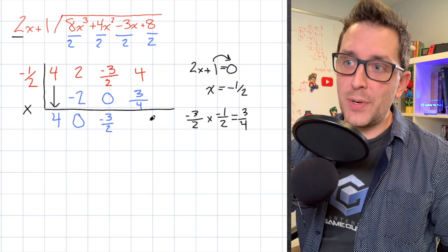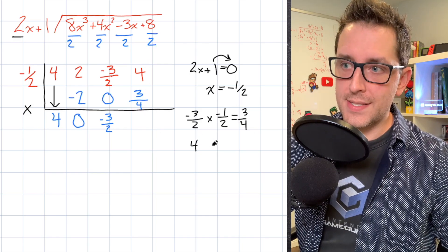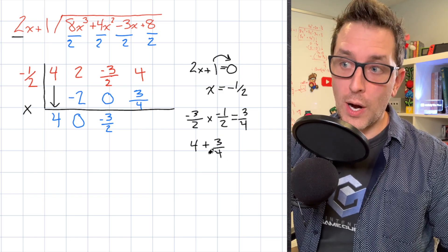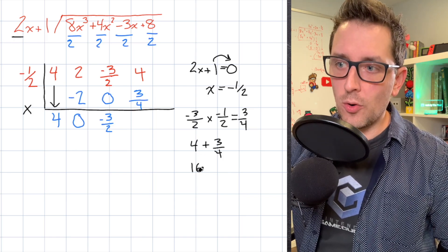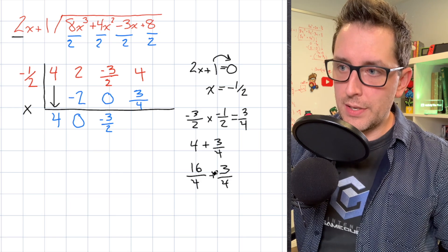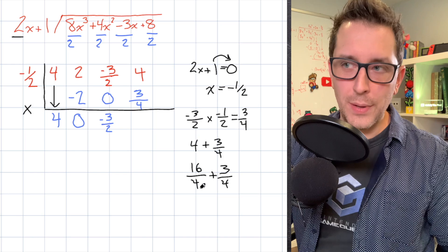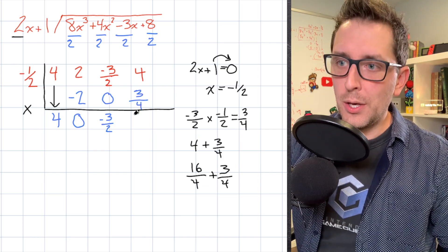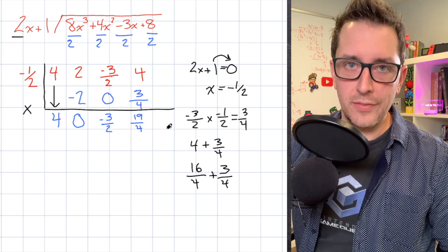The last thing we need to do is add straight down the final column: 4 plus 3 over 4. To add these, I find a common denominator — writing 4 as 16 over 4 — so 16 over 4 plus 3 over 4 equals 19 over 4. Not the nicest looking fraction, but nothing we can't handle. I'll write that as the last value in our synthetic division table.